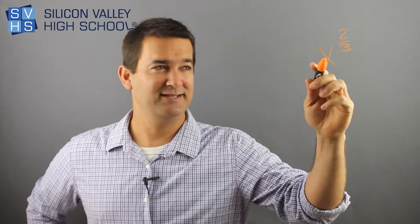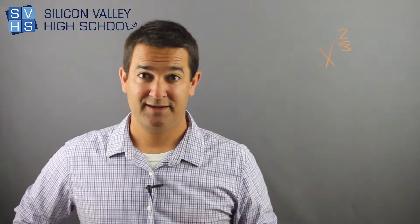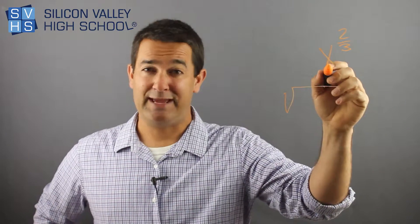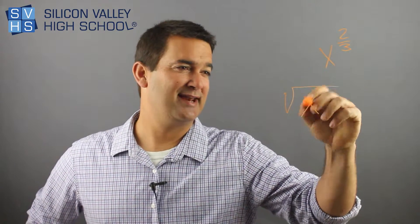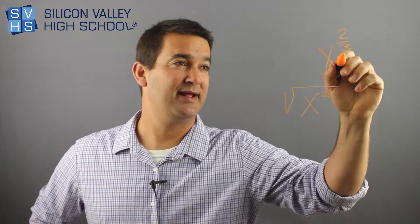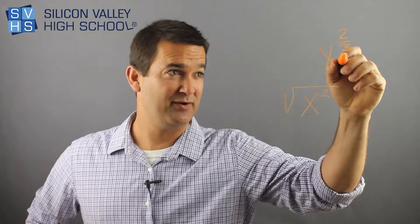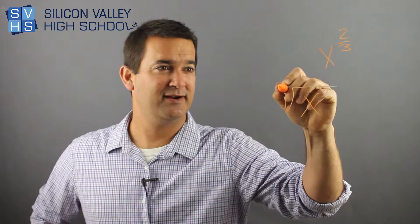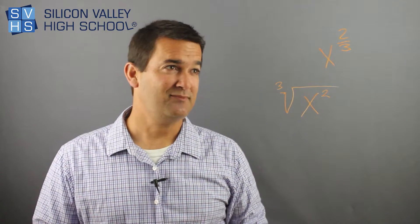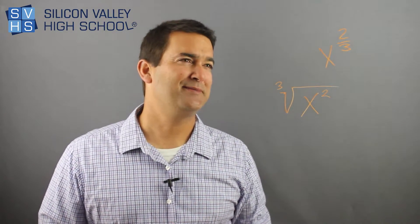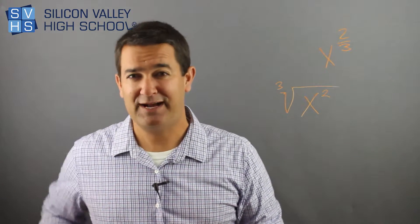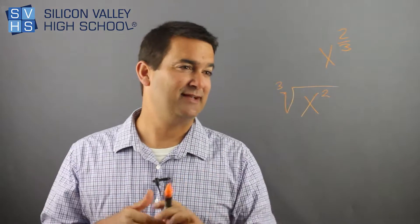Basically, all this means is you end up with a root. The way I think of it is you put an empty shell — you keep the base, which in this case is x. The top stays as an exponent, x squared, and the denominator of the exponent swings out to become the root index. So you end up with the cube root of x squared. Sometimes your assignment will just ask you to write the fractional exponent in root form, and that's all you do.